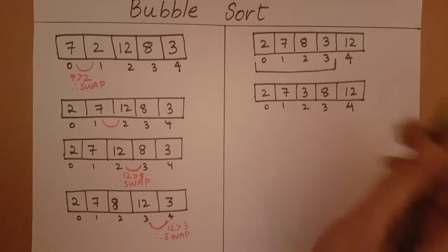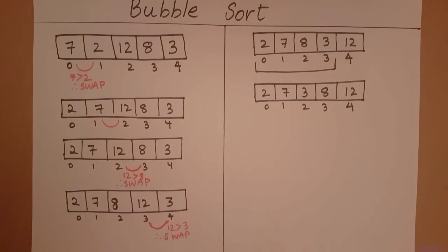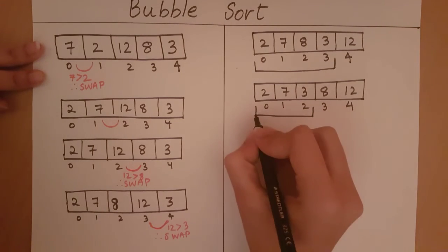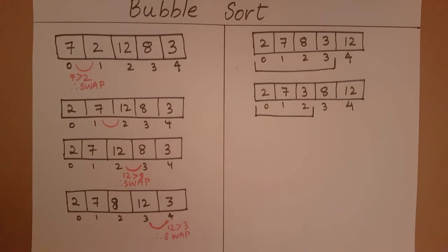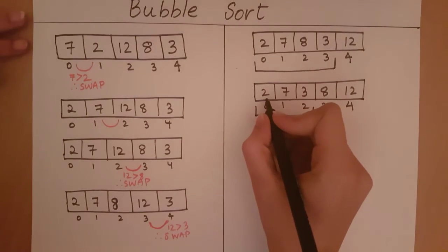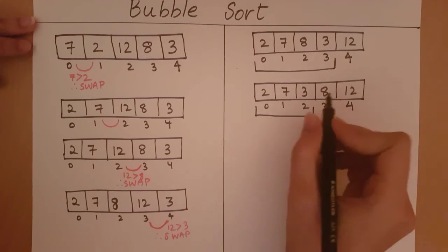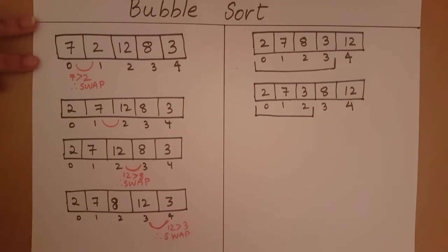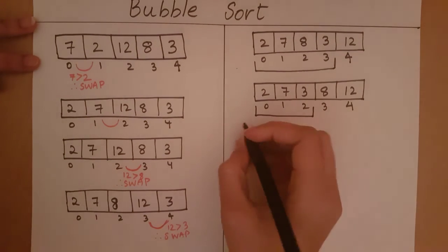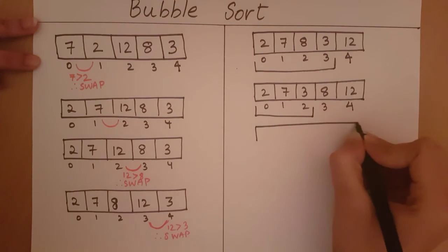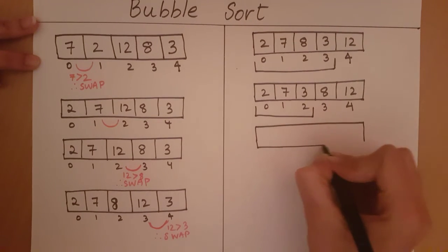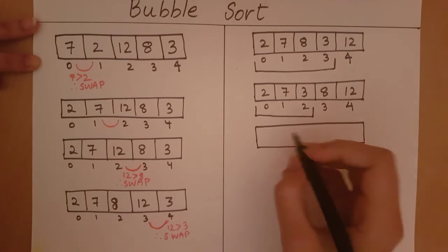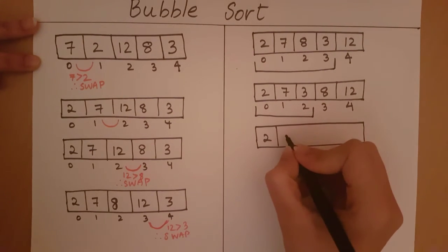As you can see, 8 and 12 are now in the correct positions. Then we will do the same process for this range. We compare 2 and 7 — they are in the correct order. Then we compare 7 and 3 — they are not in the correct order, so we will swap. After pushing the largest element to the end of this range, we will get an array which looks like this.